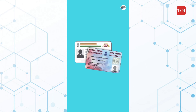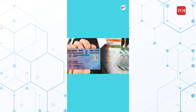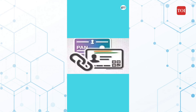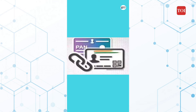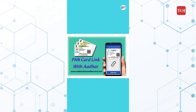It has become a mandatory process to link your PAN with your Aadhaar. The PAN-Aadhaar linking date has been extended from March 31, 2022 to March 31, 2023. However, the final date to link PAN and Aadhaar without paying a fine was March 31, 2022.